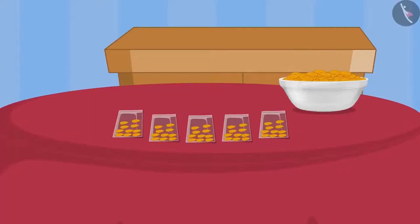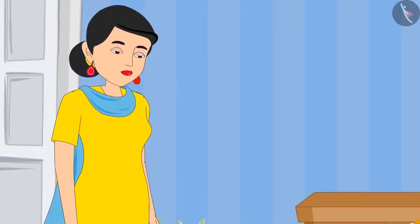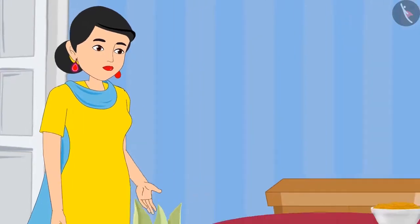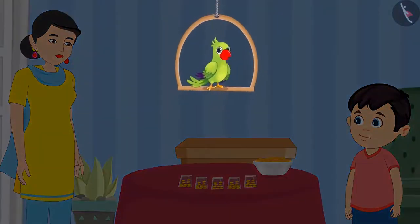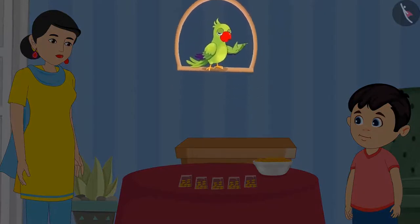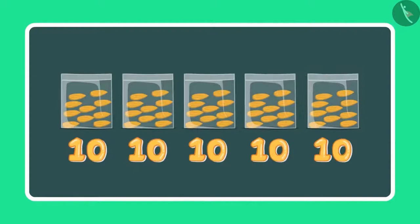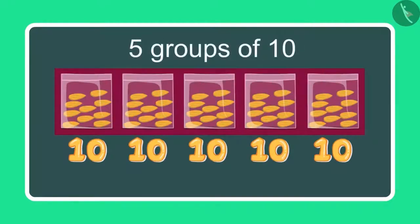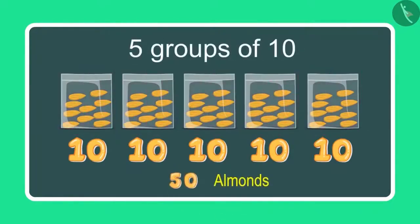See this mummy, I have made so many pouches. Chotu, how many pouches of almonds have you made? Children, can you tell me how many pouches of almonds has Chotu made? Come let us see. Mummy, I have made 5 pouches with 10 almonds in each. So it comes to 50 almonds.